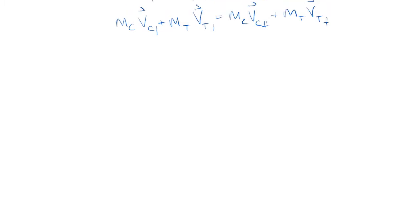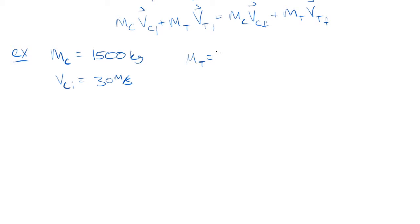Let's take this truck-car example and throw some numbers at it. The car has a mass of 1,500 kilograms and an initial velocity of 30 meters per second. The truck is a semi, so it's heavy — 20,000 kilograms — and its velocity is negative 20 meters per second. We're considering 1D motion, so the car is moving to the right, the truck is moving to the left, and they collide.